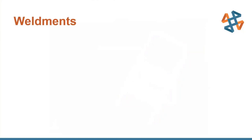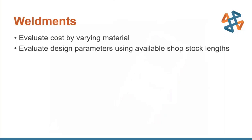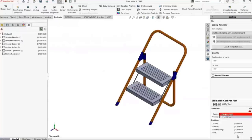Let's analyze the weldments in this structure. There are a few things we can do: evaluate costs by doing what-ifs on different types of material — for example, analyzing whether we should use aluminum or steel — and we can also evaluate design parameters, consider our design intent, and then use available shop stock lengths to build our design around.